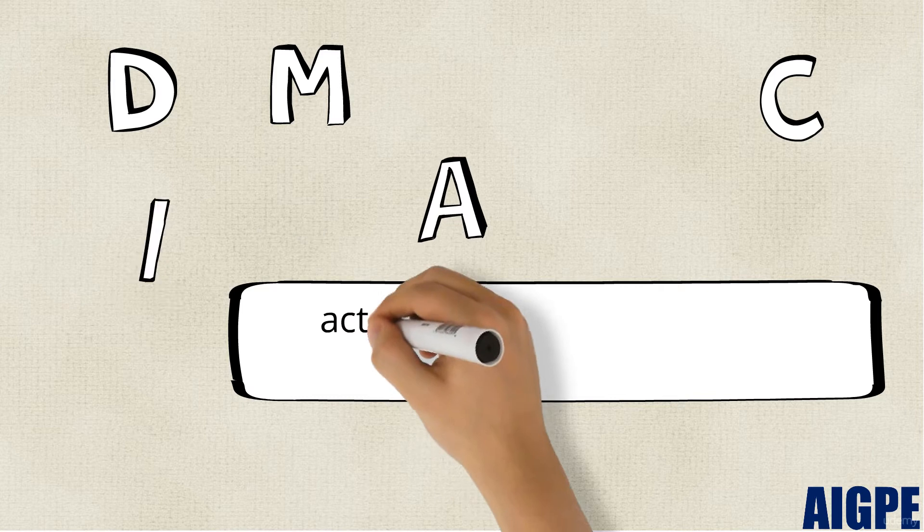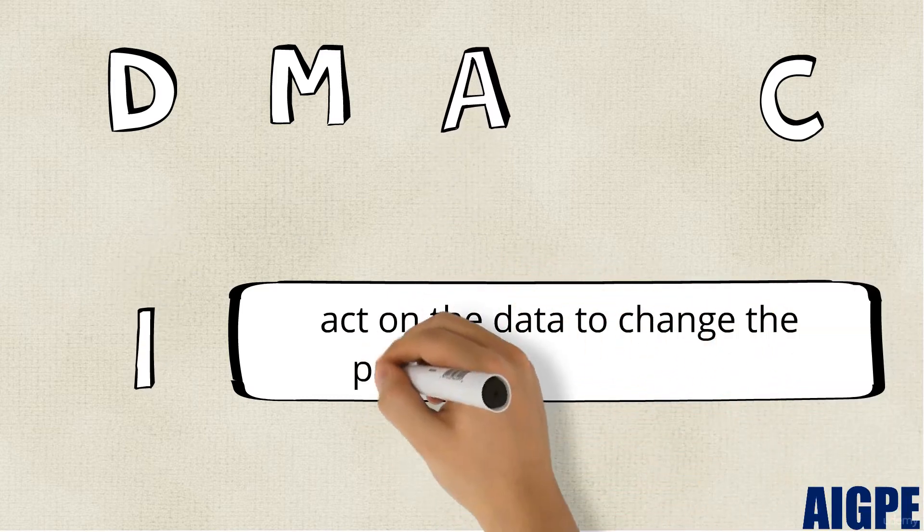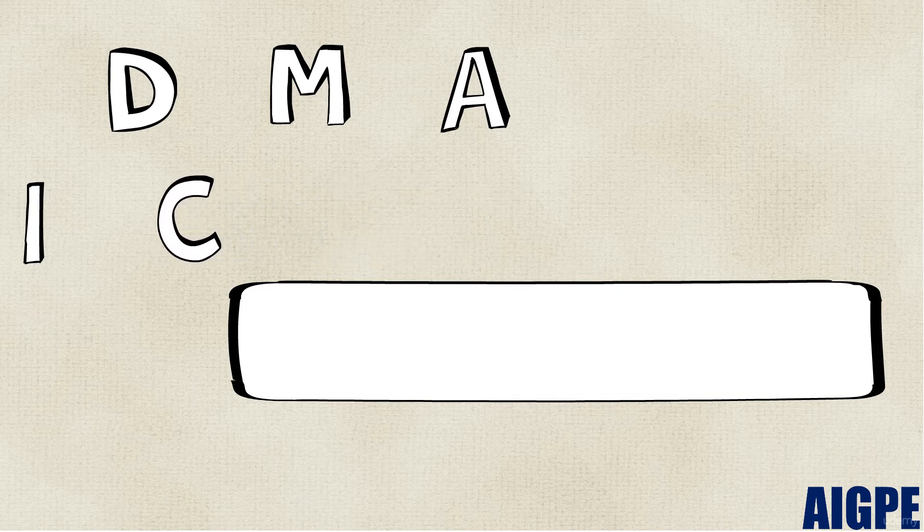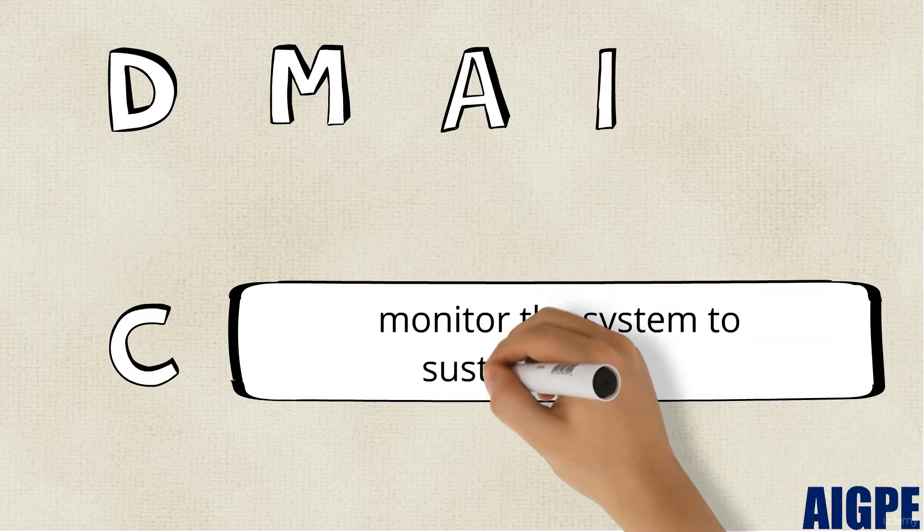Improve: act on the data to change the process for improvement. Control: monitor the system to sustain the gains.